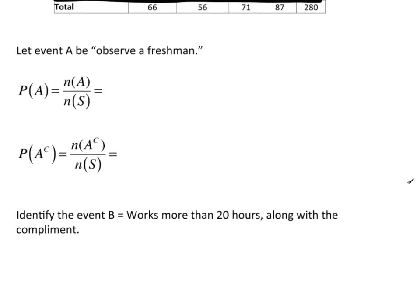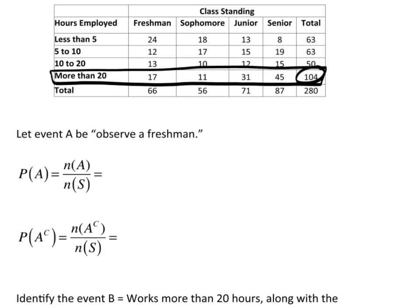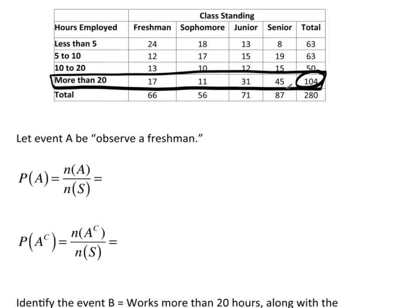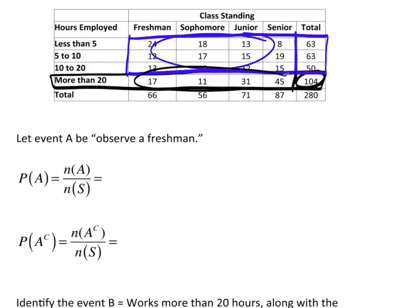So let's not do the probabilities, let's just identify it. So I just identified the works more than 20. And then the complement would be everything else: less than 5, 5 to 10, 10 to 20, which would be right here. Now, I included the totals, but actually, technically, this is the complement. And this is actually the event right here.